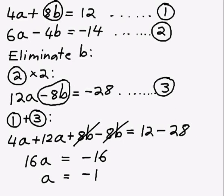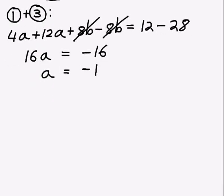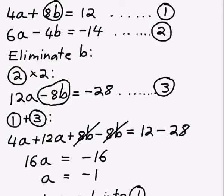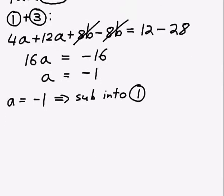So now I want to find out what b is equal to. Now I can do this by taking my value of a equals negative 1 and substituting it into one of my equations. In this case, I'm going to substitute it into equation 1. So I'll go up and look at equation 1. 4a plus 8b equals 12.